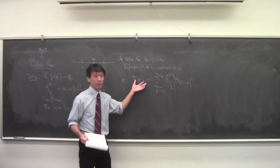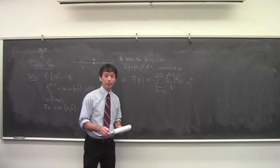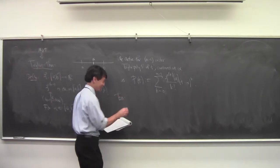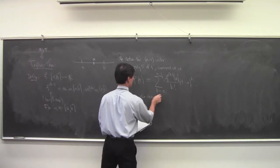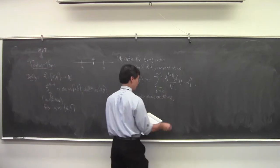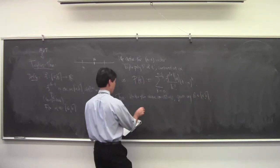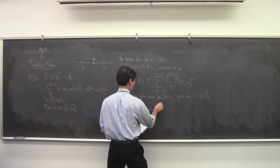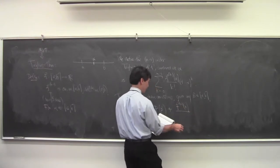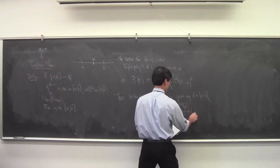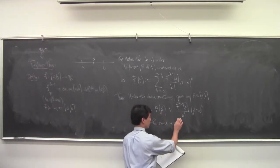This is something you've all seen before back in calculus. Now here's the theorem. Under the above conditions, given any beta in [A, B], f(beta) equals the Taylor polynomial P(beta) plus f^(n)(x) / n! times (beta − alpha)^n, for some x between alpha and beta.